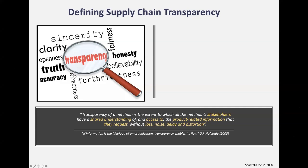His definition of transparency is: the extent to which all of the net chain stakeholders have a shared understanding of, and access to, product-related information that they request without loss, noise, delay, or distortion. The 'shared understanding' brings up things like GS1 standards and the ability to agree on how we name products, the distinctions between master data and transactional data, and of course if you don't have access to the data it negates the benefits of it.